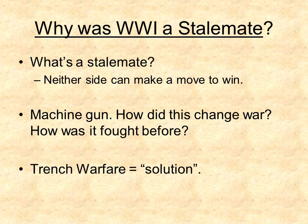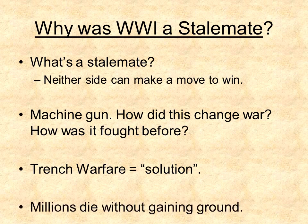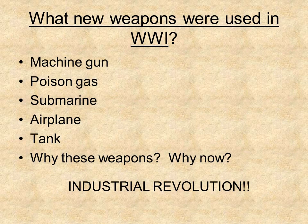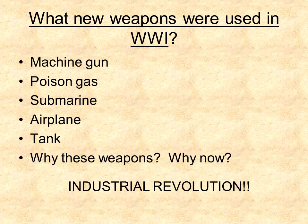There were many new instruments and guns used in World War I, such as the machine gun, resulting in millions of deaths. The weapons used in World War I included the machine gun, poison gas, submarine, airplane, and tank. These weapons existed because of the Industrial Revolution.